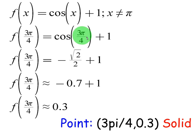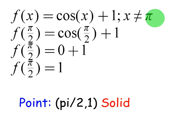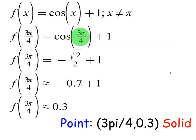Next, we're going to have 3π over 4, which is also less than π. So 3π over 4 is just before π. Cosine of 3π over 4 is negative square root of 2 over 2 because it's in the second quadrant, which is approximately negative 0.7. Cosine of x plus 1, so it's negative 0.7 plus 1, which is 0.3. So my next point is 3π over 4 comma 0.3, and it's going to be a solid point.